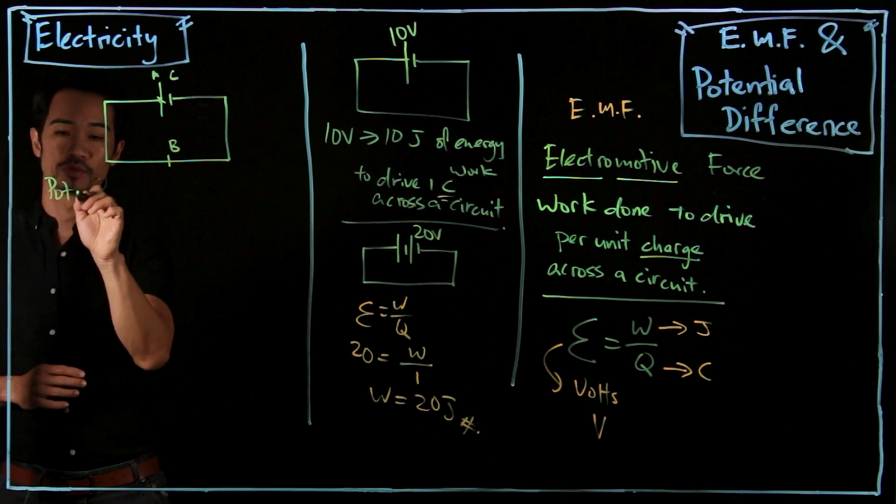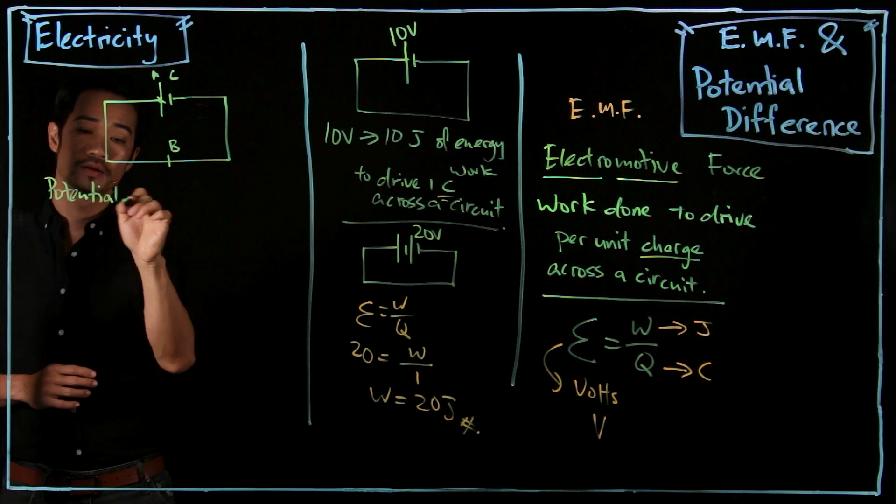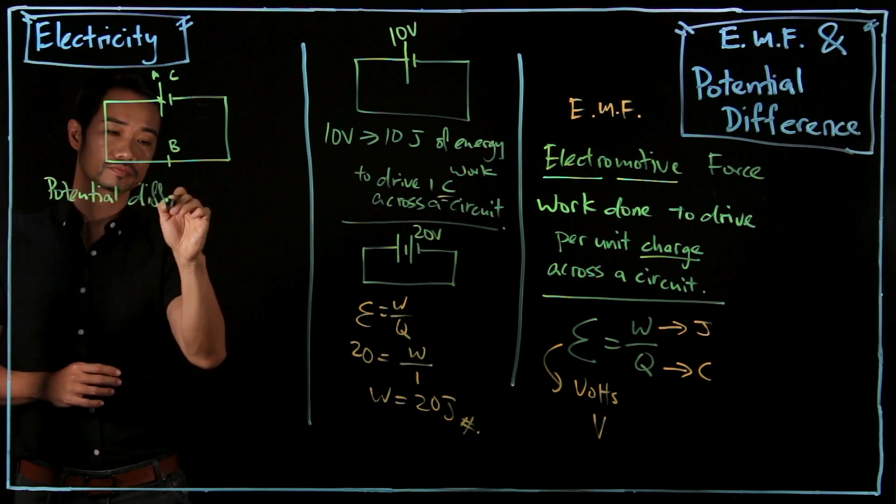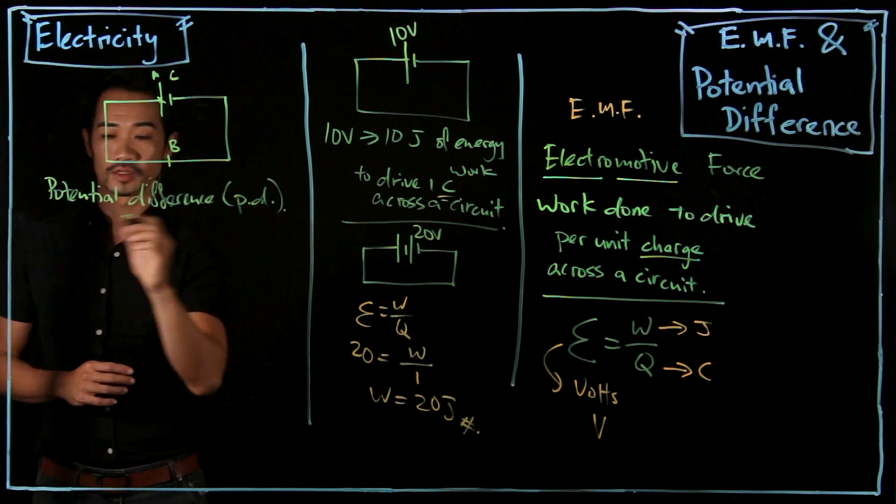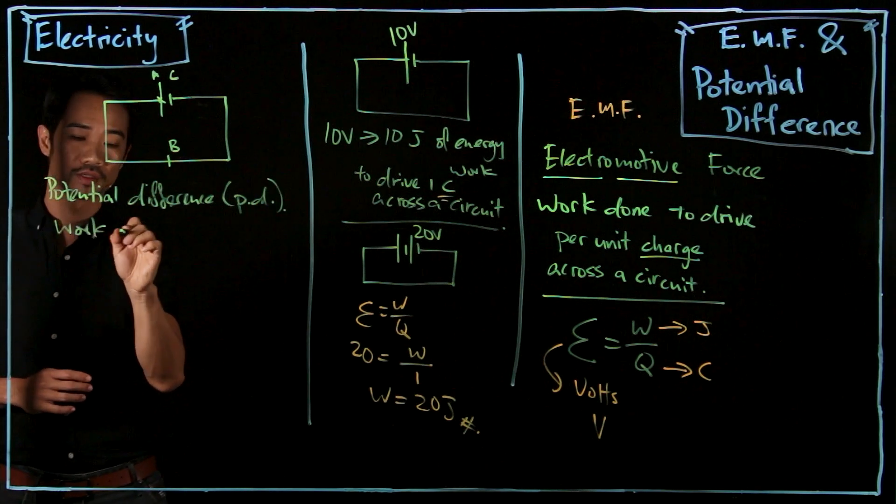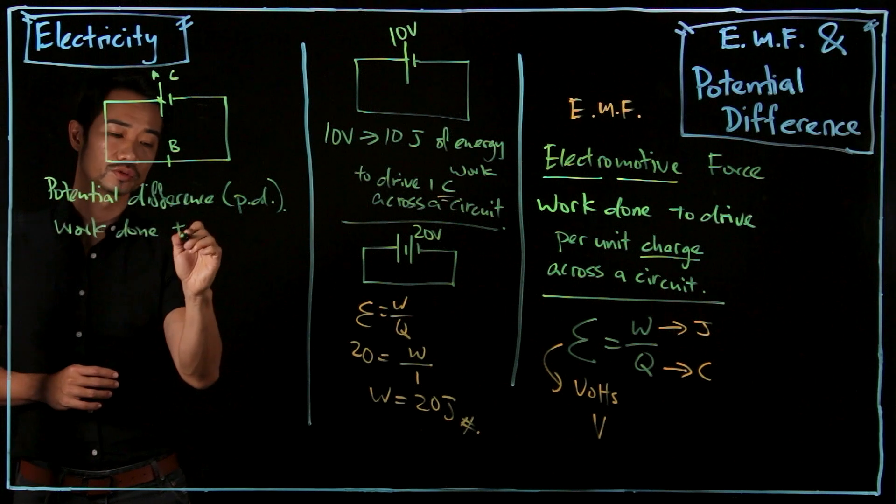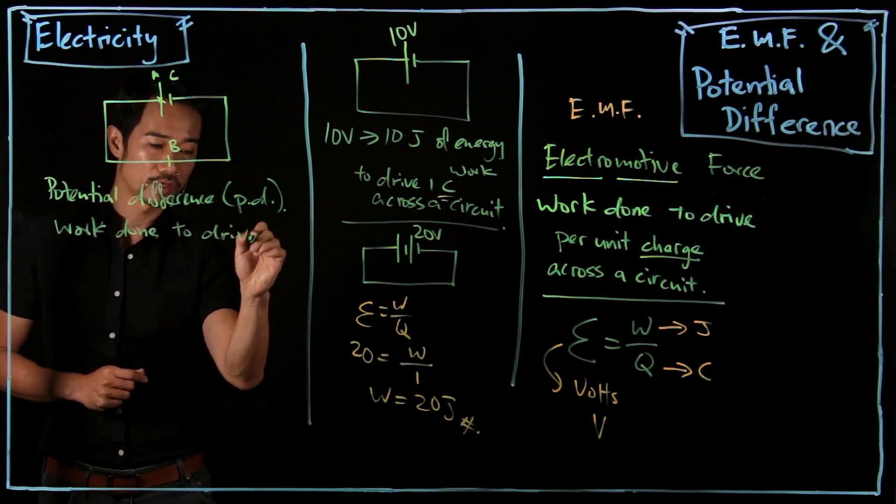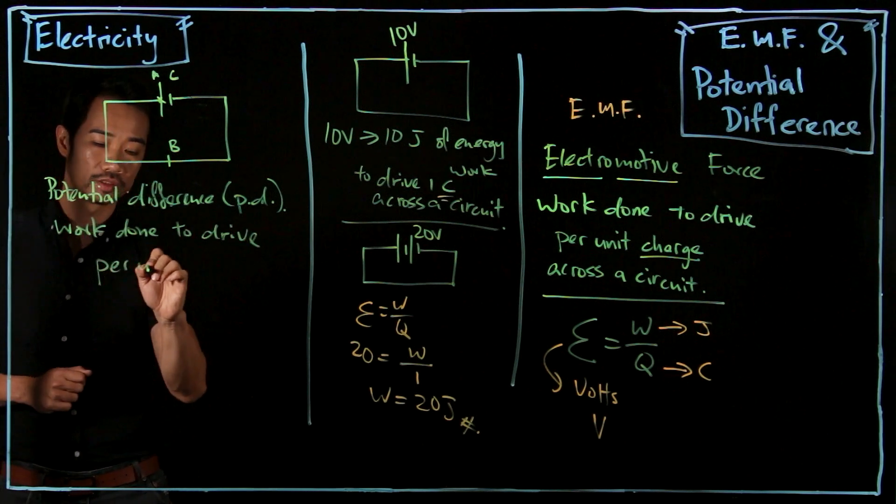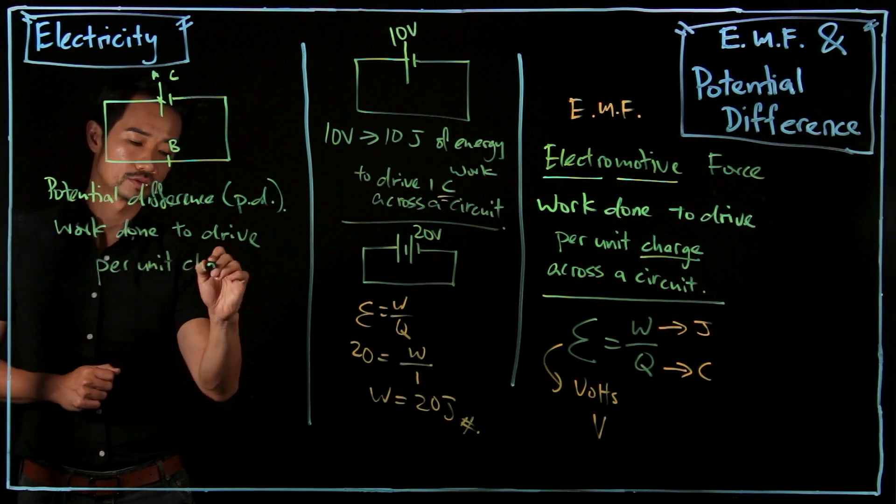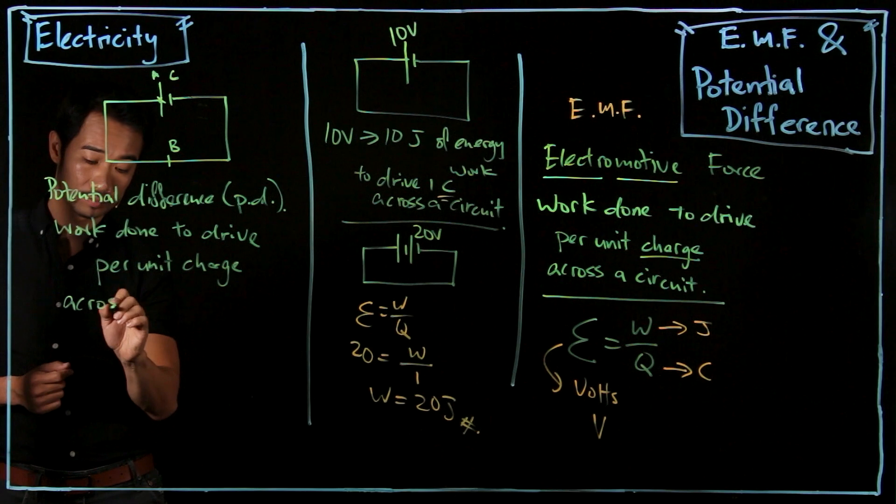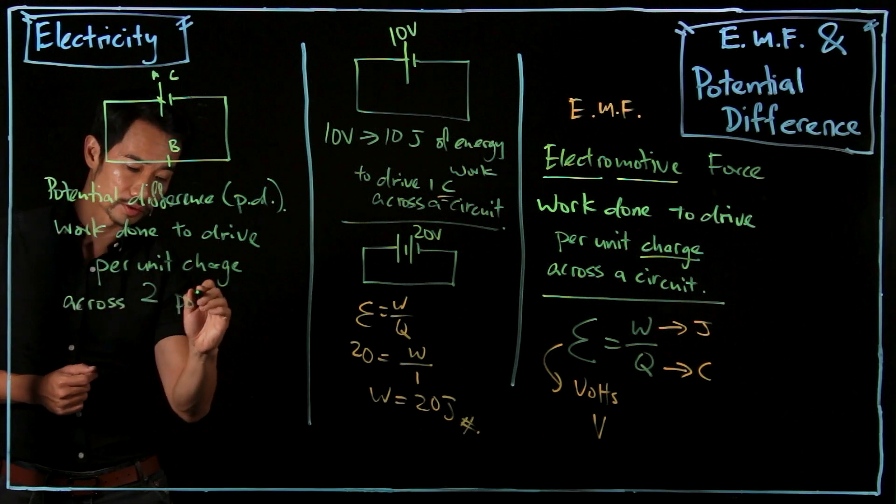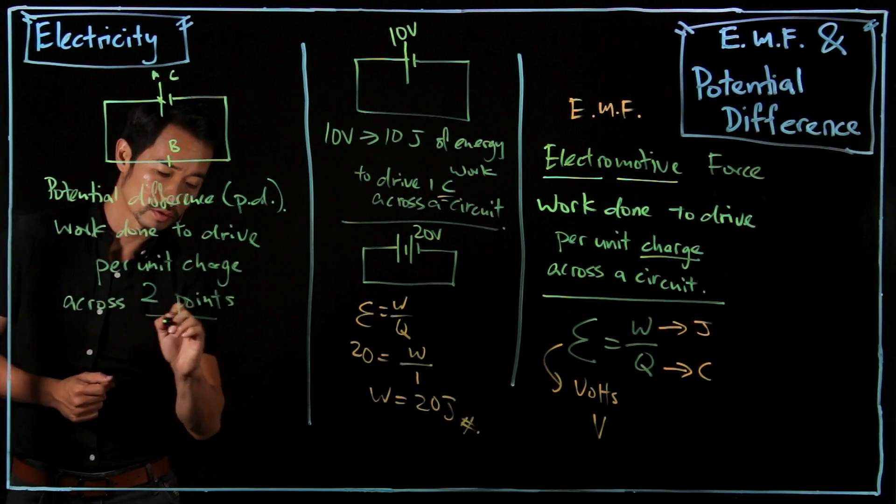What is potential difference? Potential difference, or in short PD, is the work done to drive per unit charge across two points.